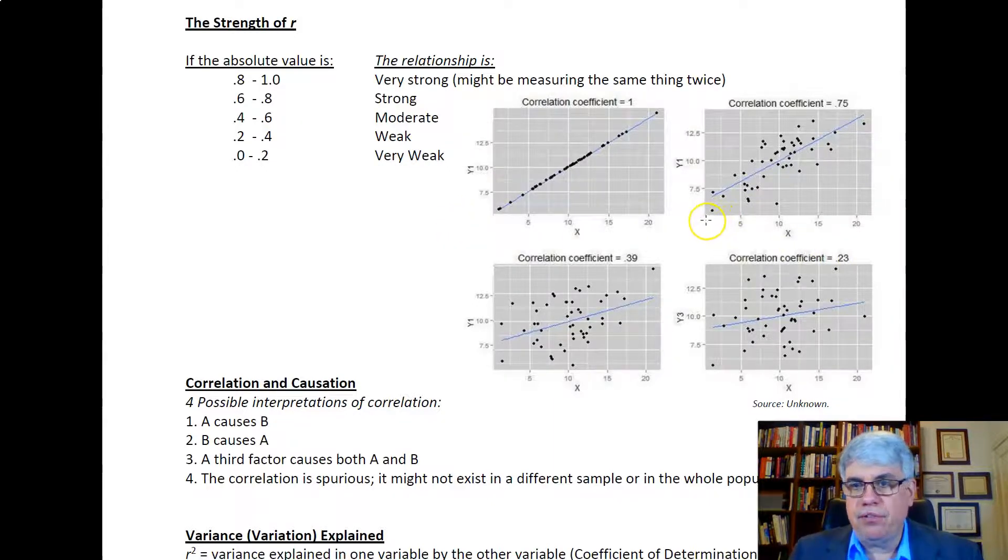0.75 is a strong correlation, and all the dots are fairly close to the line. Here we've got 0.39, which is kind of a weak to moderate correlation. We can see the line still pretty well, but there's some of them that aren't very close to the line.